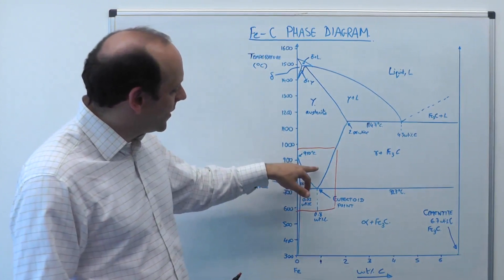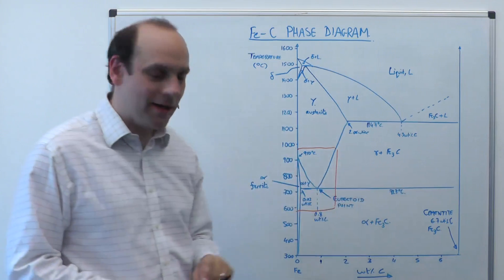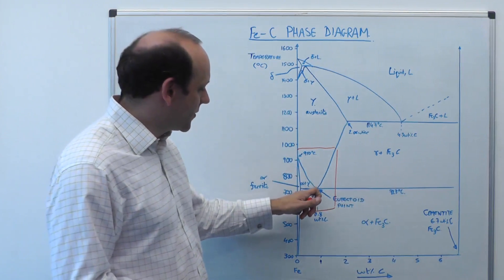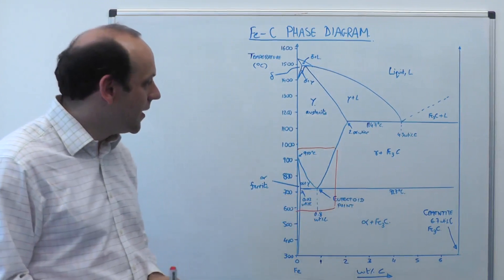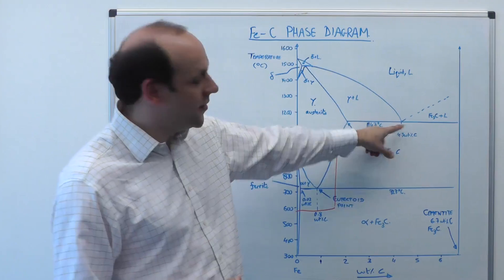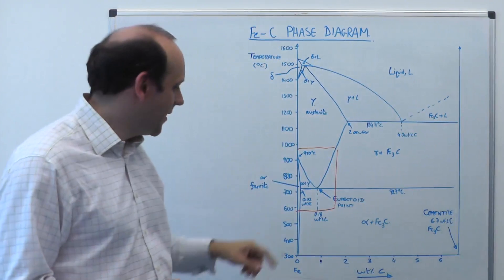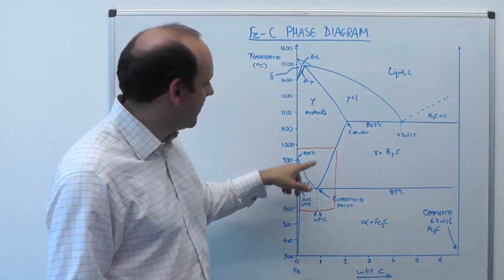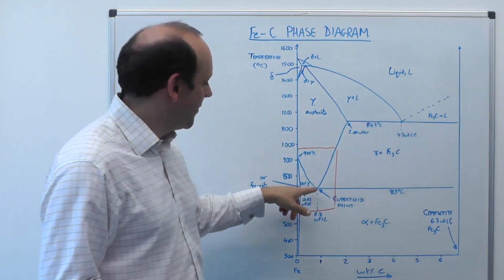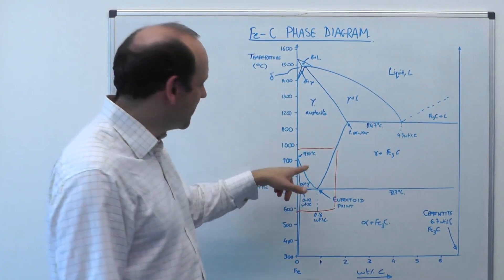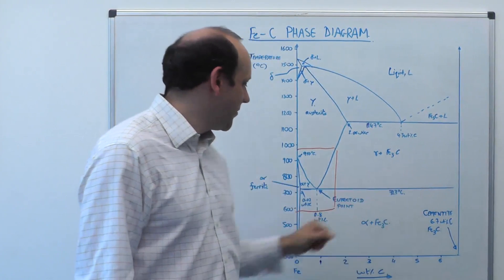We're considering a system that has austenite, ferrite, and cementite, and that undergoes what's called a eutectoid reaction at 0.8 weight percent carbon. That's analogous to the eutectic — we can see a eutectic between the liquid, austenite, and Fe3C. The difference is the eutectic is between a liquid and two solid phases, while the eutectoid is between a solid phase, austenite, and two other solid phases — alpha and Fe3C.